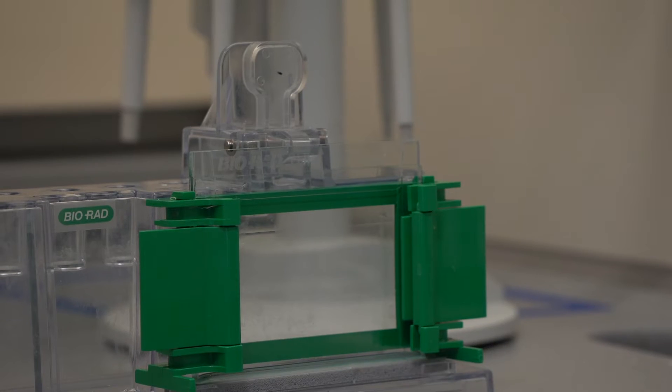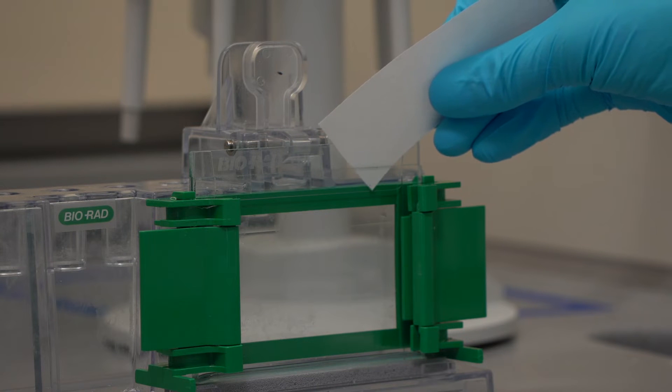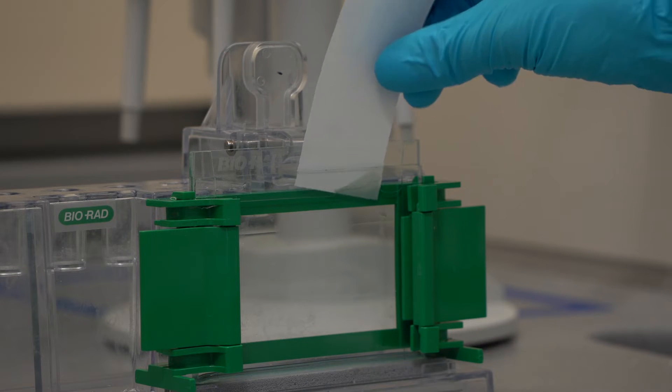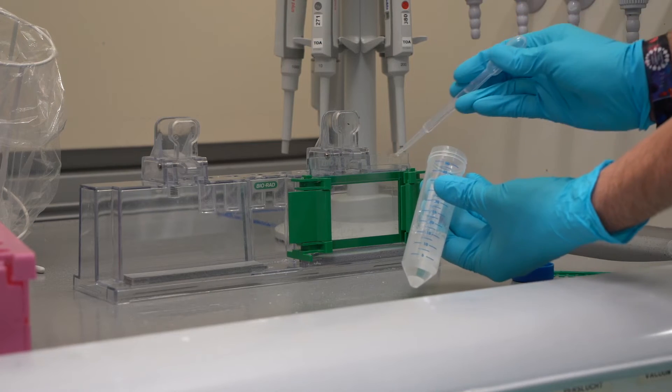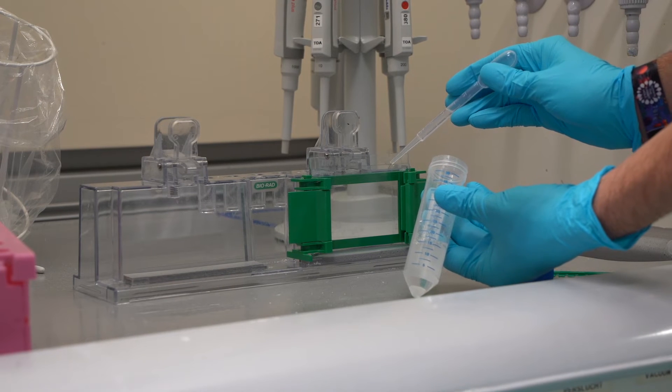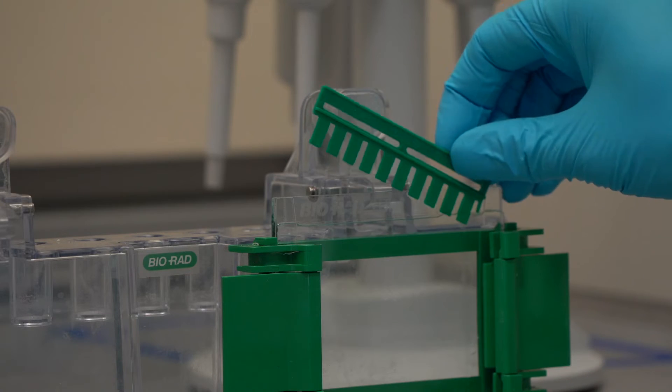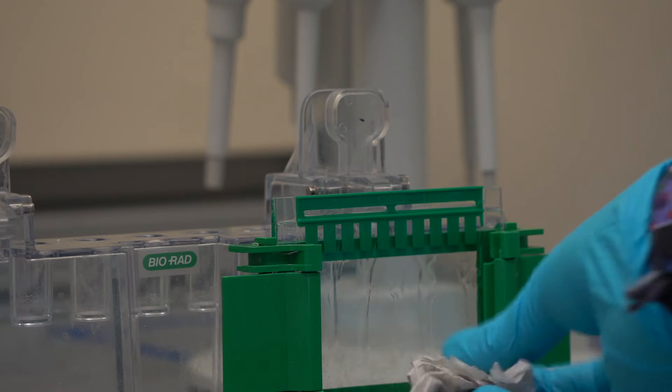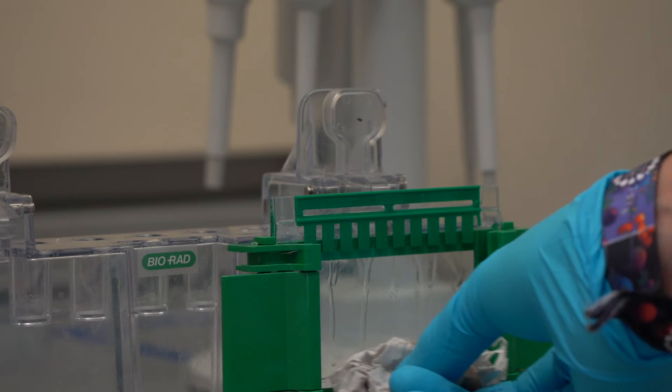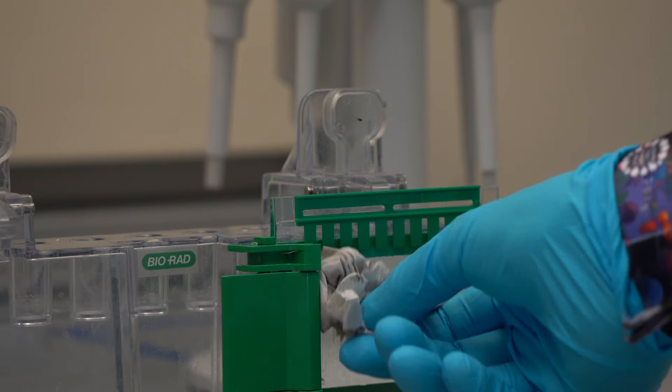After the polymerization of the running gel, the isopropanol is removed with a filter paper. Pipette the stacking gel on top of the running gel. Place the comb in the gel in between the glass plates and immediately remove the excess liquid. Ensure that no bubbles form between the comb and the gel.